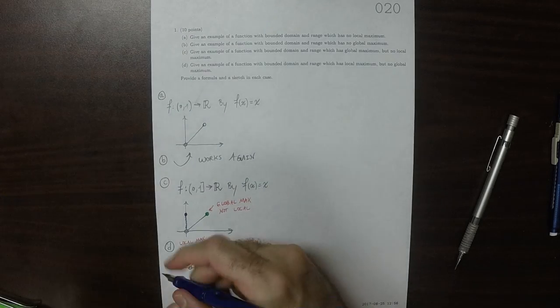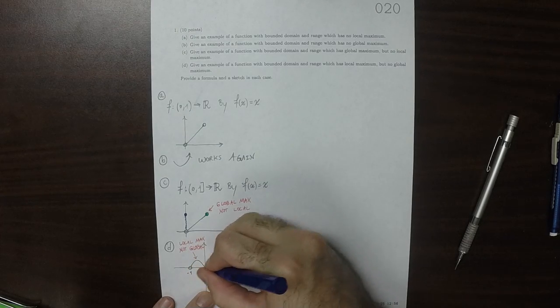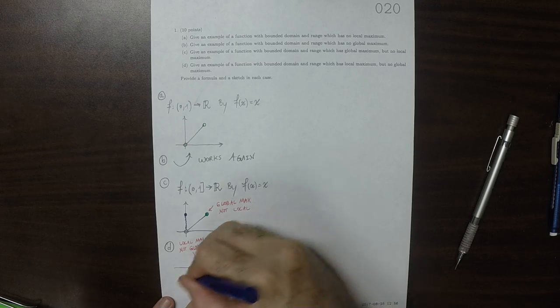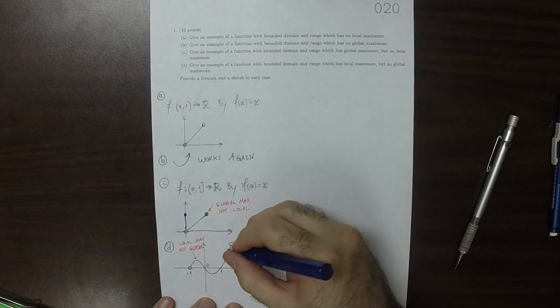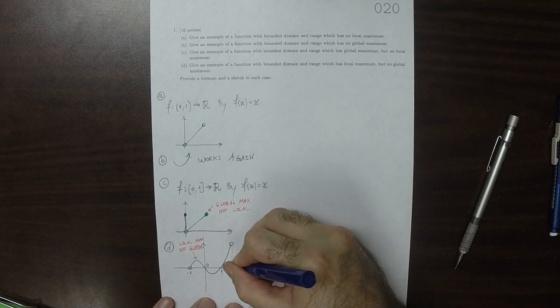Well, if this is negative one, and that's x is zero, and this is x is one, then this could be way up high, say over here at x is two.